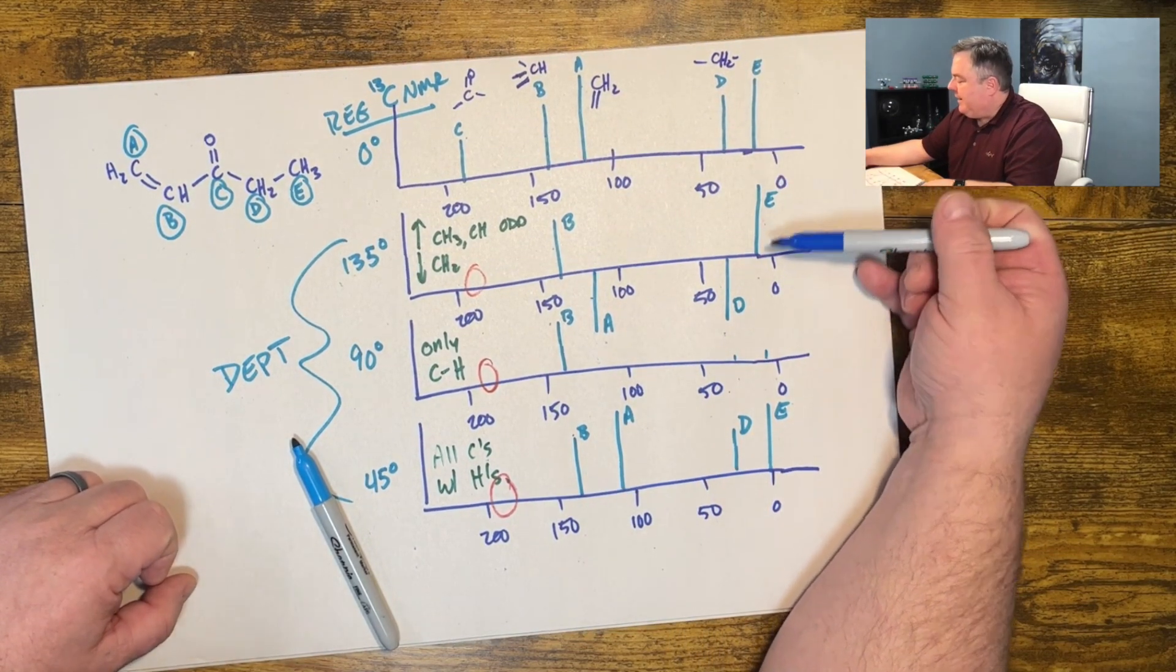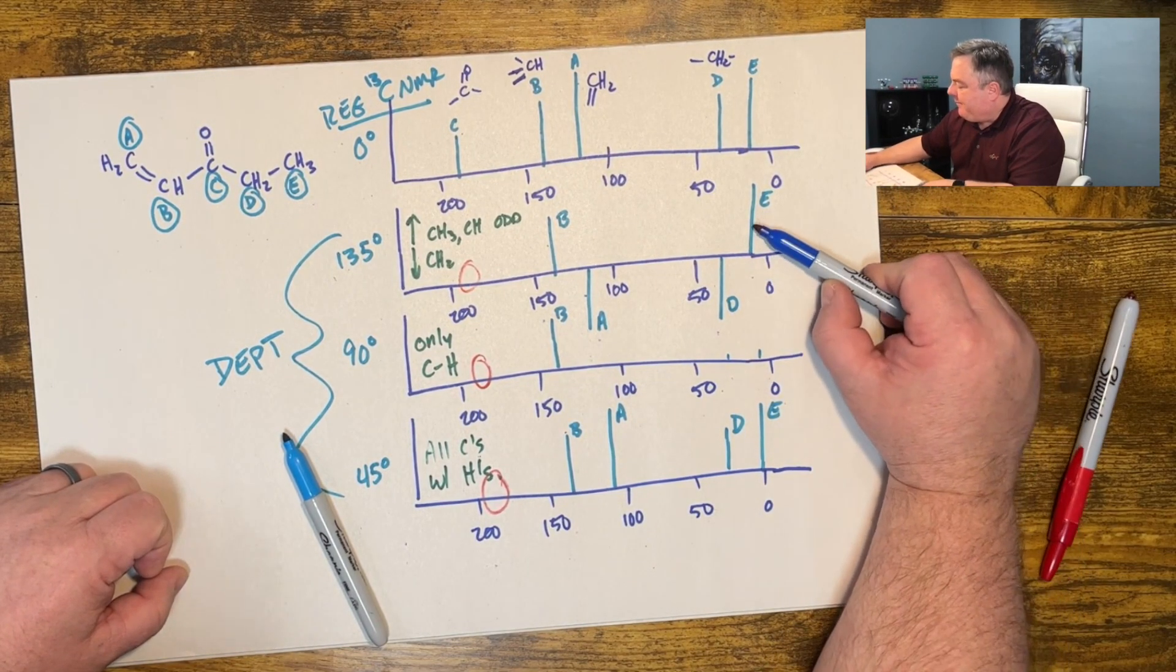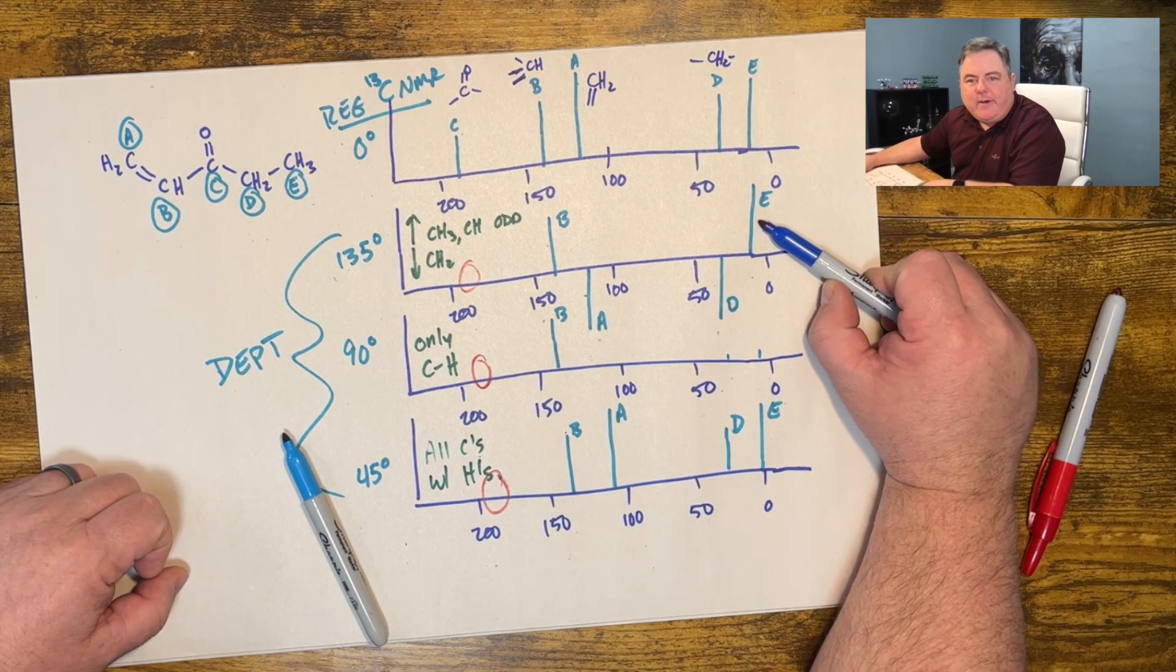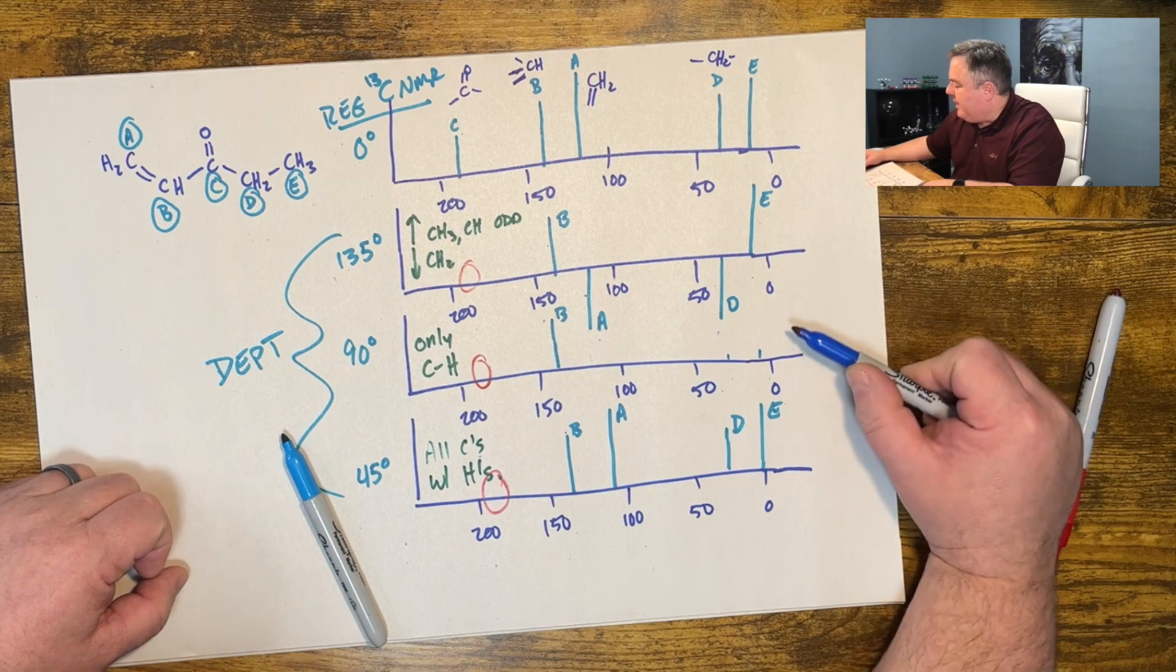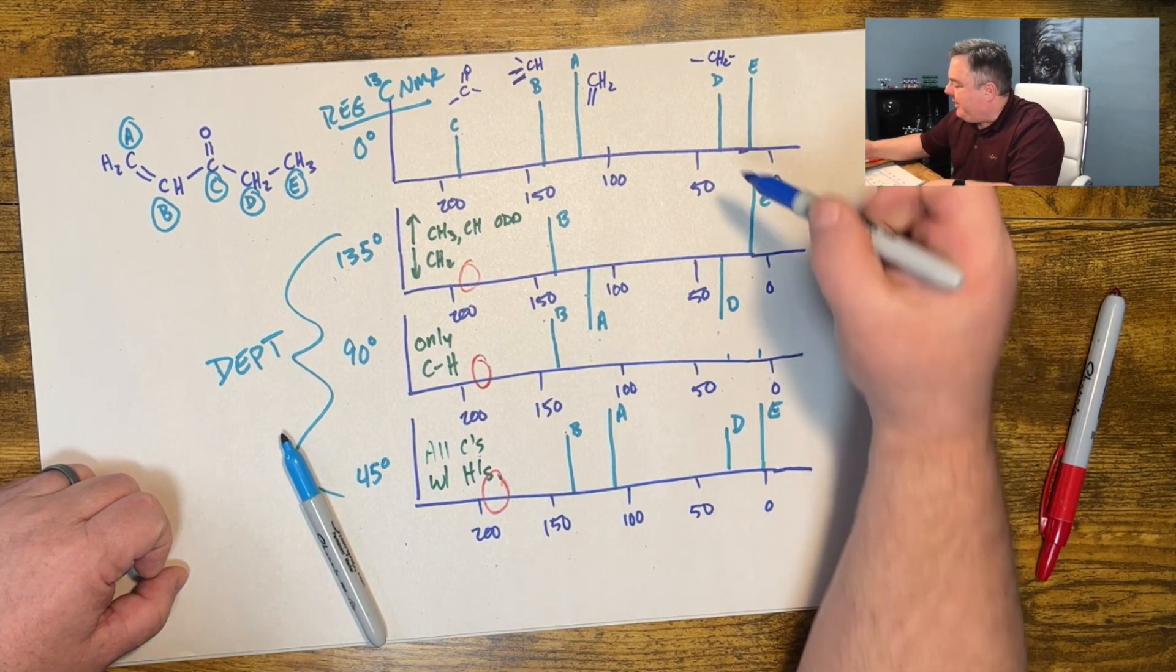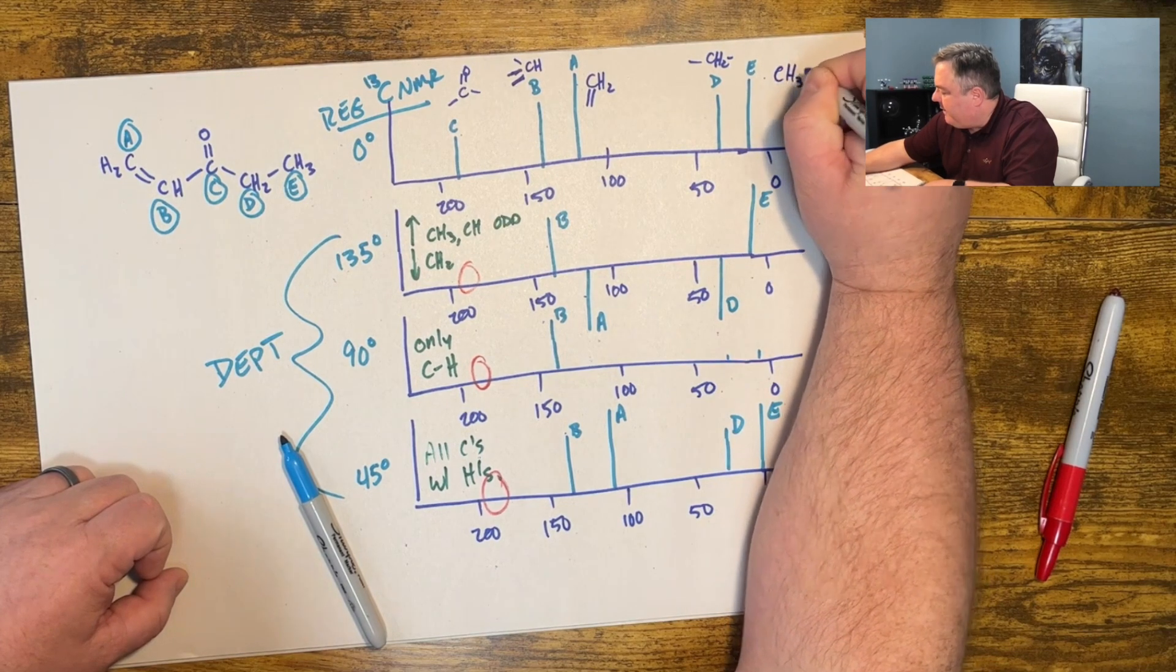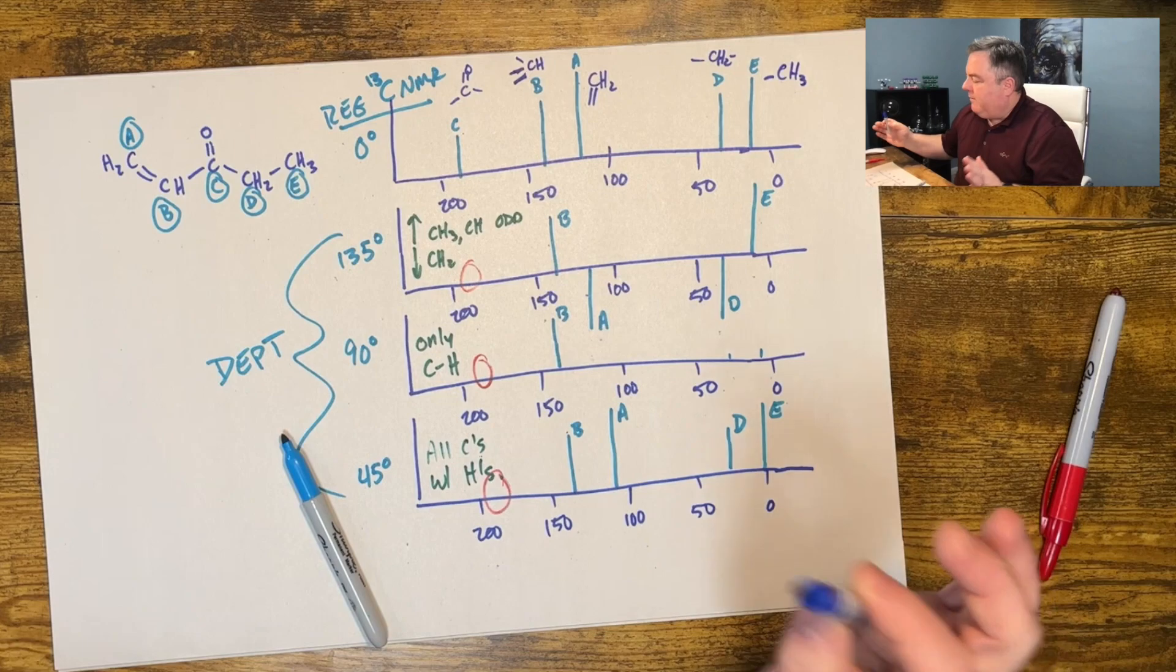So I know what each of these are, how many hydrogens are on them. E, here's how I would have interpreted that one. Let's see, it's got hydrogens on it. It's either an odd number of hydrogens because it points up. It's a CH or CH3, but it does not show up here with the CHs. It must be a CH3.